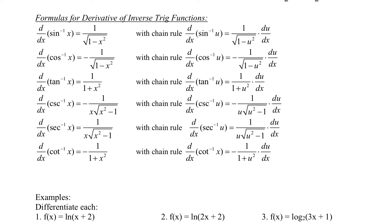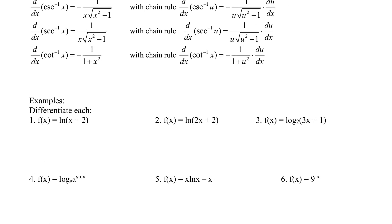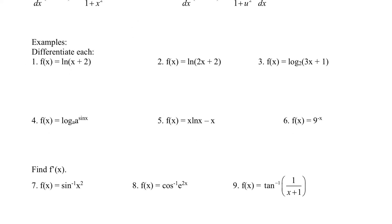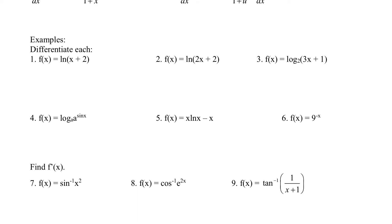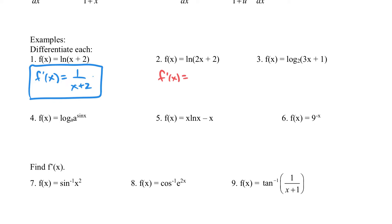Let's take a look at a few examples. For the first one, f(x) = ln(x), so f′(x) is just 1 over x times du/dx, which is just 1. For the next one, f(x) = ln(2x + 2), so f′(x) is 1 over (2x + 2) times the derivative of (2x + 2), which is 2. That gives 2 over 2(x + 1), which reduces to 1 over (x + 1).